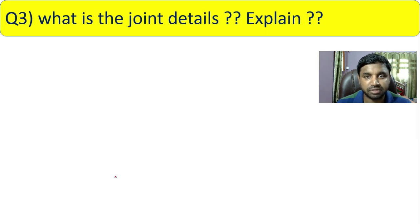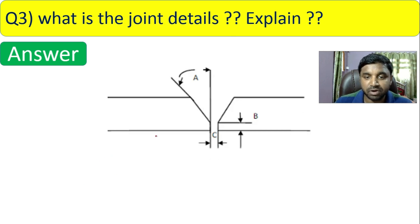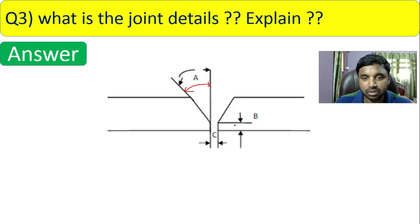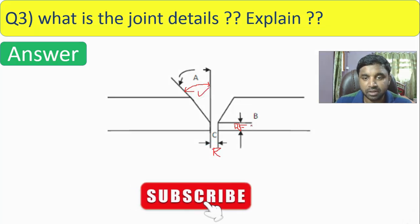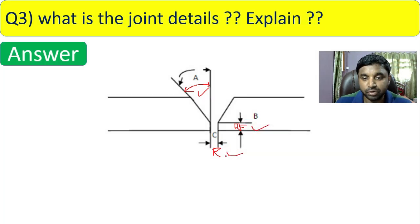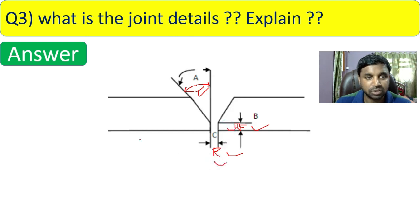Question 3: what is joint detail? Explain. If given a sketch of a joint, your answer should identify: the included angle (also called bevel angle), the root face, and the root gap. These three items — included angle, root face, and root gap — describe a groove weld joint detail.